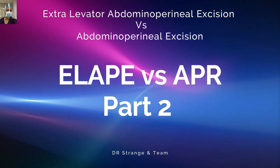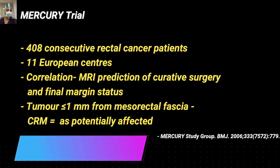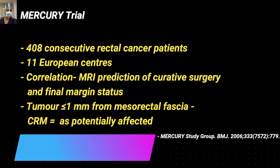Whenever we are planning the preoperative assessment of a rectal cancer patient - specifically a low rectal cancer patient, that is a tumor in the lower five centimeters - it is always desirable per the NCCN panel that we get a CT of the abdomen and chest and an MRI of the pelvis. CT is not an adequate cross-sectional imaging for rectal cancer, specifically the lower third; MRI pelvis is a must.